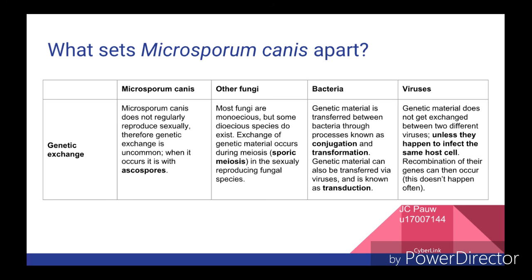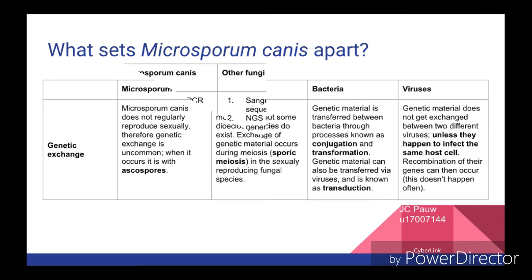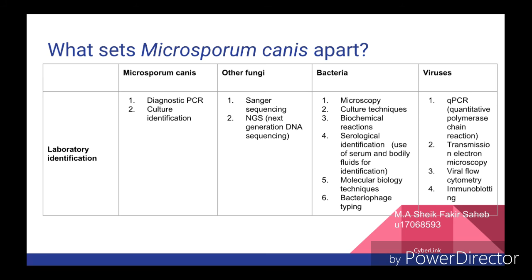Viral genetic material does not regularly get exchanged or recombined unless two viral species happen to infect the same host cell, in which recombination can then occur. Laboratory techniques used to identify Microsporum canis are diagnostic polymerase chain reaction and culture identification. To identify other fungi, Sanger sequencing and next generation DNA sequencing are used. To identify bacteria: microscopy, culture techniques, biochemical reaction, serological identification, molecular biology and bacteriophage typing. Finally, to identify viruses: quantitative polymerase chain reaction, transmission electron microscopy, viral flow cytometry and immunoblotting.